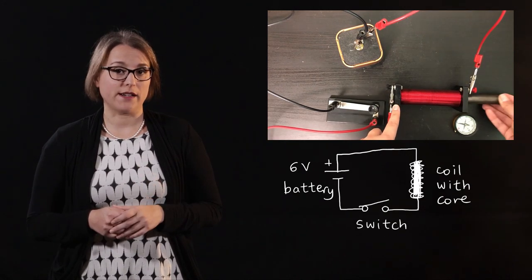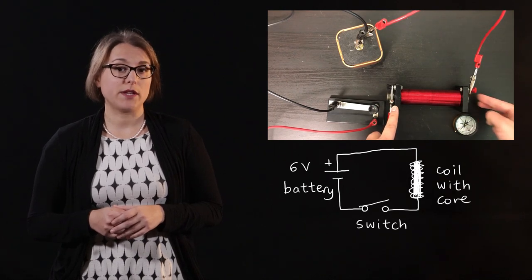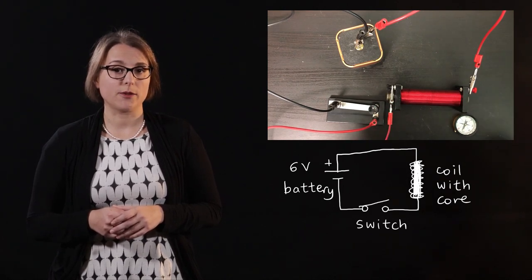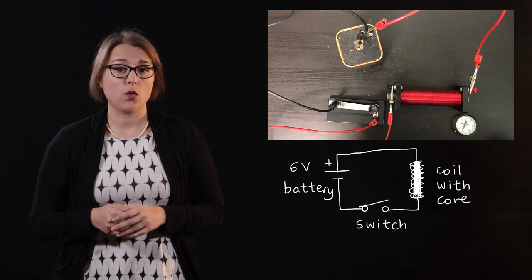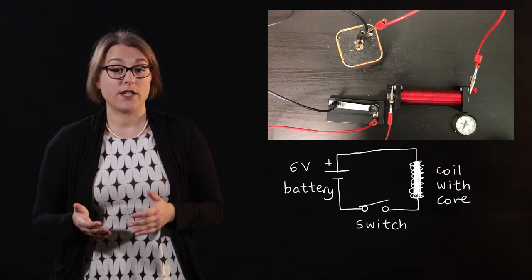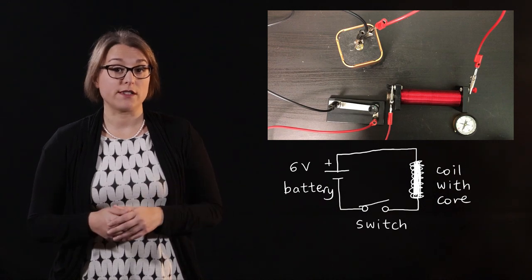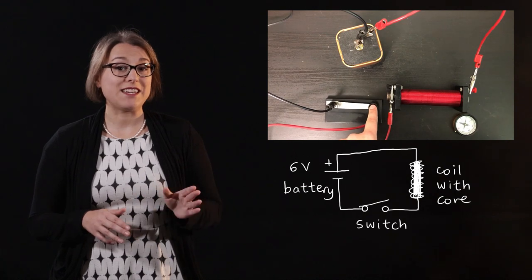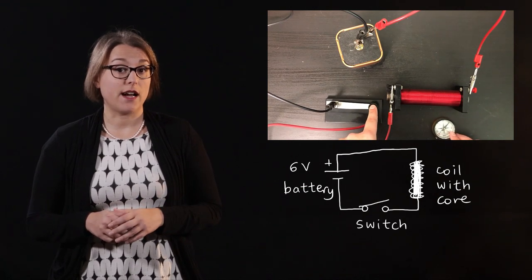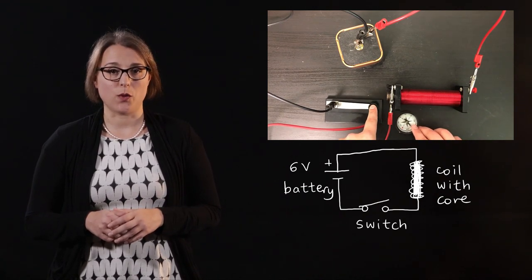To create a strong electromagnet, an iron core can be placed into the center of the coil of wire. The current creates a magnetic field that magnetizes the iron core. The magnetism of the iron core then further increases the magnetic field of the electromagnet. The compass reacts to the magnetic field even faster after I place an iron core into the center of the coiled wire.